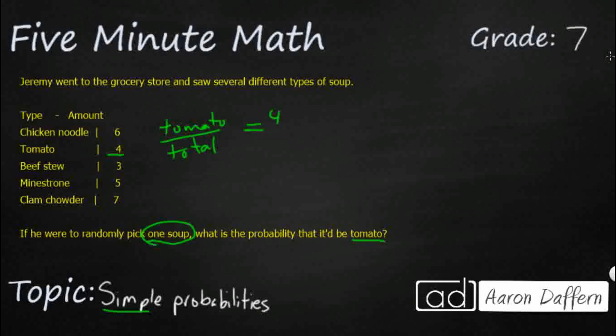We need to find our probability as a simple fraction: tomato soup over our total. Tomato, we've got 4. Let's add everything up to see what our total is going to be. 6 and 4 make 10, 7 and 3 make another 10, that's 20, add the 5, that's 25. So we've got 4 out of 25. You cannot reduce that, but sometimes you might be asked to show your probability not as a fraction but as a decimal or percent.